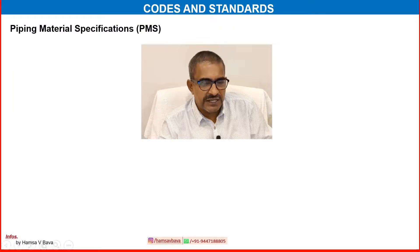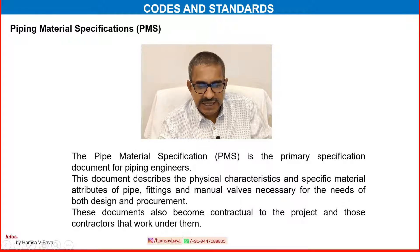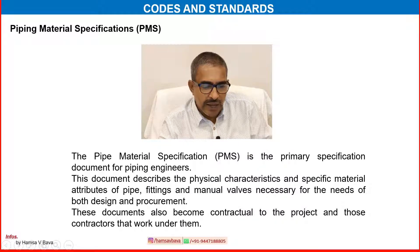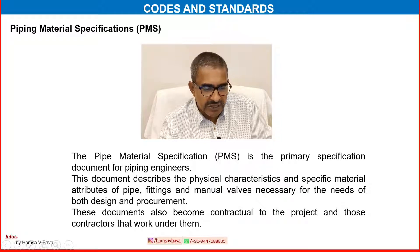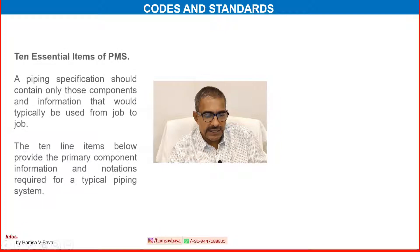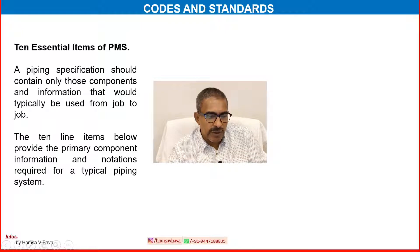The piping material specification, or PMS, is the primary specification document for piping engineers. This document describes the physical characteristics and specific material attributes of pipe, fittings and manual valves necessary for the needs of basic design and procurement. This document also becomes contractual to the project and those contractors that work under them. A piping specification should contain only those components and information that would typically be used from job to job.